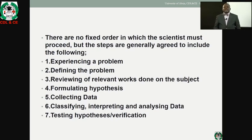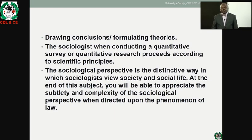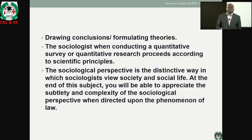There is no fixed order in which scientists must proceed, but the steps are generally agreed to include: experiencing a problem, defining the problem, reviewing relevant work done on the subject, formulating hypotheses, collecting data, classifying, interpreting and analyzing that data, testing hypotheses and verification, drawing conclusions and formulating theories. Sociologists, when conducting quantitative surveys or qualitative social research, proceed according to these scientific principles. The sociological perspective is the distinctive way in which sociologists view society and social life.